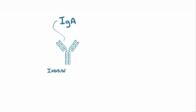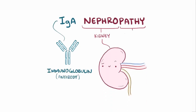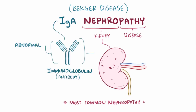IgA is a class of immunoglobulin, or antibody, and nephropathy means kidney disease. IgA nephropathy, sometimes known as Berger disease, is the most common form of nephropathy worldwide, and it happens when an abnormal IgA forms and deposits in the kidneys, causing kidney damage.